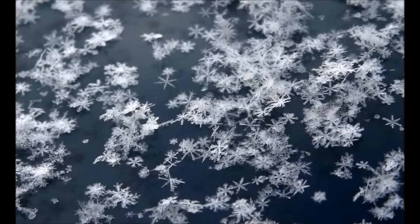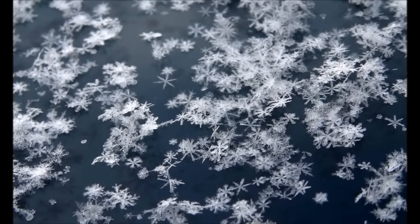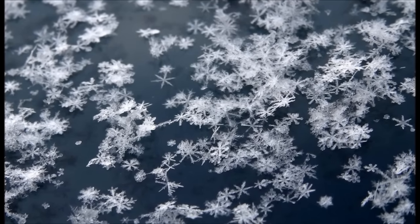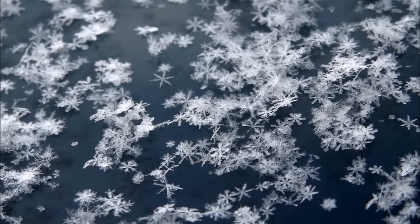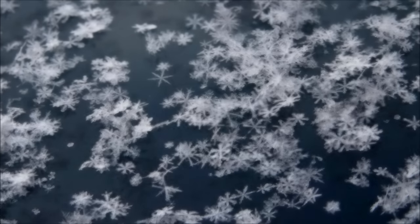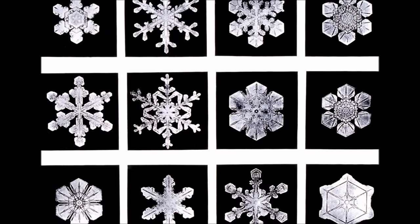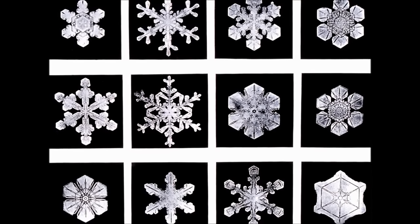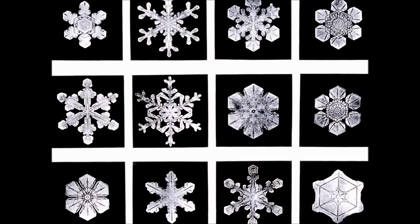Snow only occurs when temperatures are freezing all the way from the cloud to the ground. The loose, open structure of snowflakes means that snow contains a lot of air, which is the reason that snow is soft and fluffy instead of hard and icy. Although it may not be true that no two snowflakes are alike, snowflakes may form in many different shapes in a variety of complicated structures.